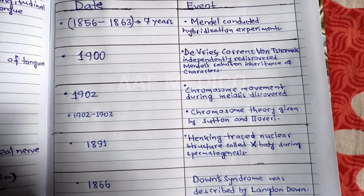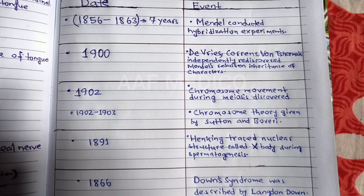The next and last date was 1866. This means we have to go back to the era of Mendel. In this year, Langdon Down described the Down syndrome.